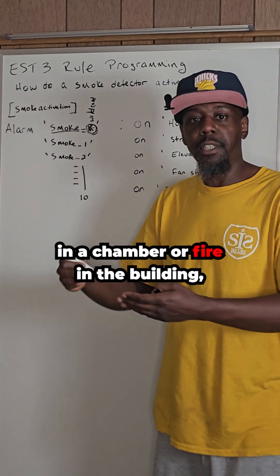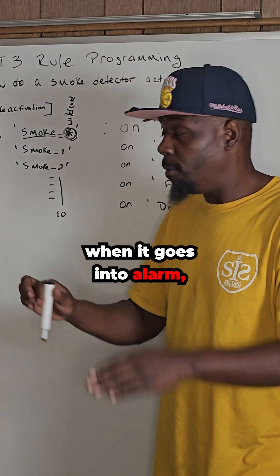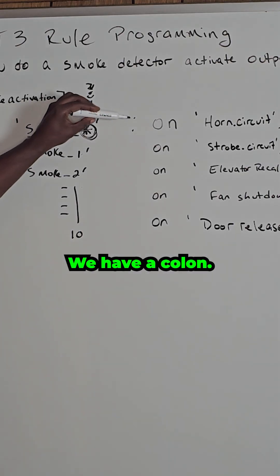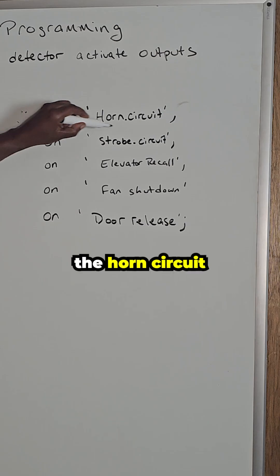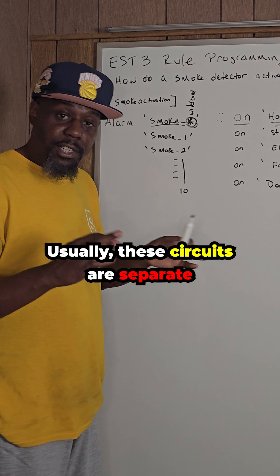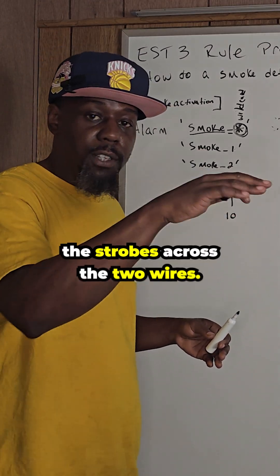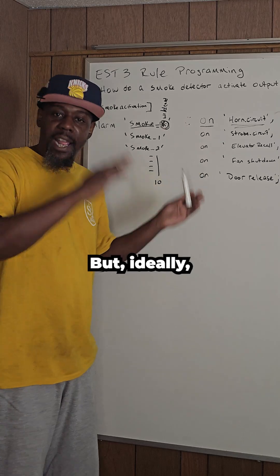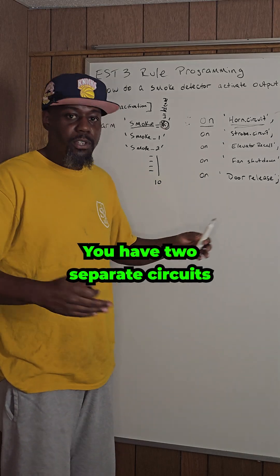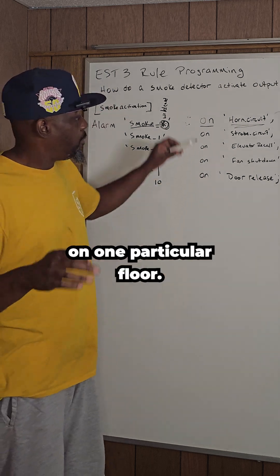If there's smoke in the chamber or fire in the building, the smoke detector will go into alarm. On the output side, after the colon, we want to turn on the horn circuit because we will have horns and strobes. Usually these circuits are separate, or nowadays we can run it on two-wire and sync the strobes across the two wires. Ideally you have two separate circuits — especially in a Class C building, with A and B circuits, maybe C or D if you have multiple circuits on one floor.